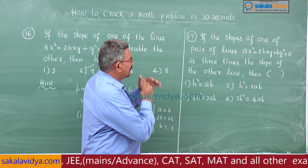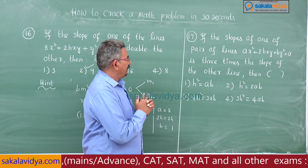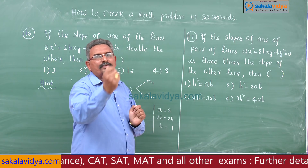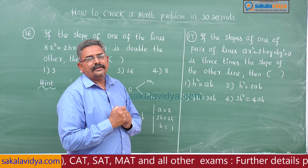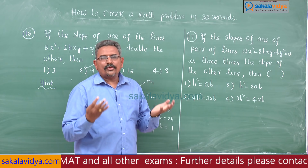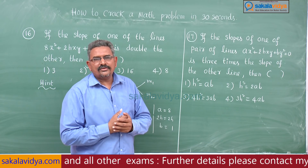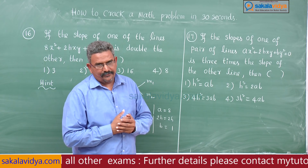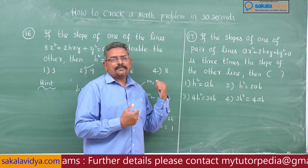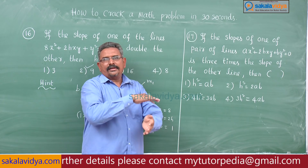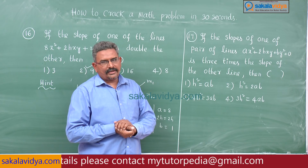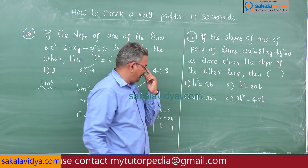Here, the key word is that the slope of the first line is 3 times the slope of the second line. That means the slopes are in the ratio 1:3. I will explain the shortcut, but we have to convert it into the quadratic equation first, then we can solve it.